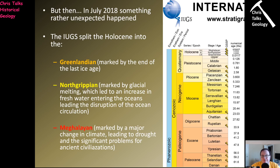So what does it split it up into? Well, first of all, the Greenlandian, which is marked by the end of the last ice age — that's when the Greenlandian begins. The Greenlandian ends when it transitions into the Northgrippian, which is marked by glacial melting that led to an increase in fresh water entering the oceans, leading to a disruption in ocean circulation — we can see that in the form of changes in sea rocks and also changes in the fossils. Finally, the Northgrippian transitions into the Meghalayan, which is marked by a major change in climate leading to drought and significant problems for ancient civilizations. So it has been split up based on logical boundaries, but it did rather catch everyone off guard and led to, in a geology sense, a bit of an argument.